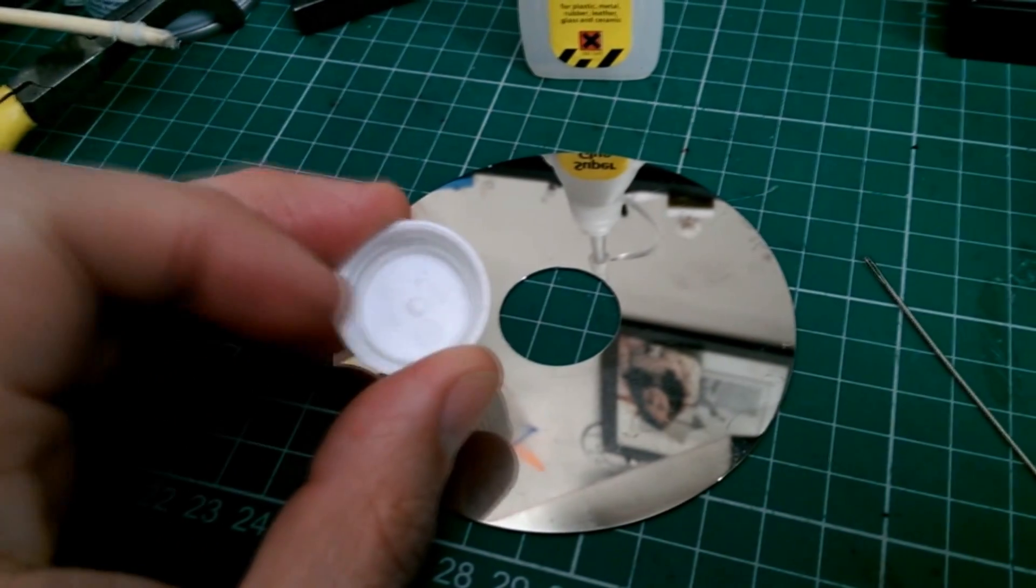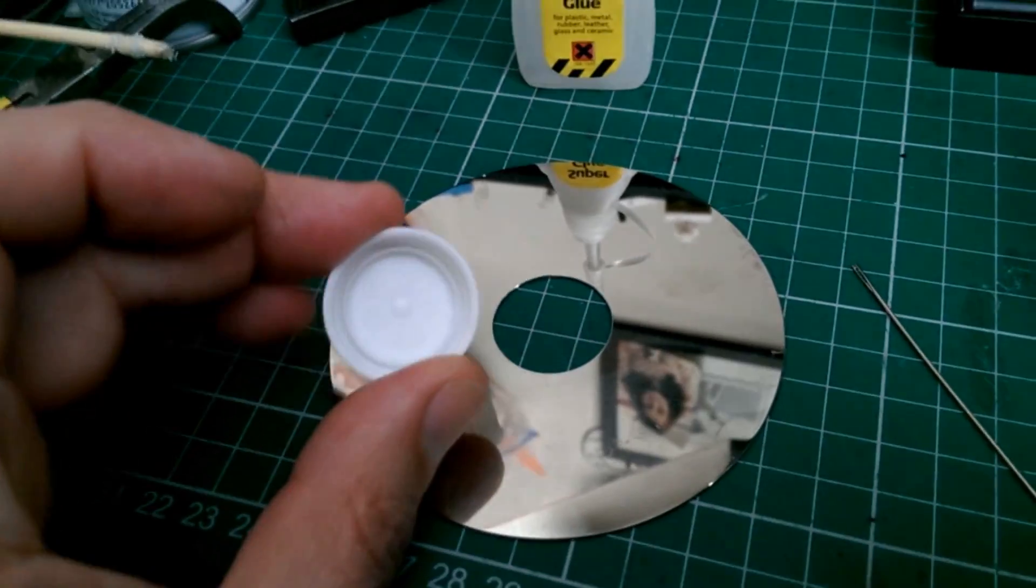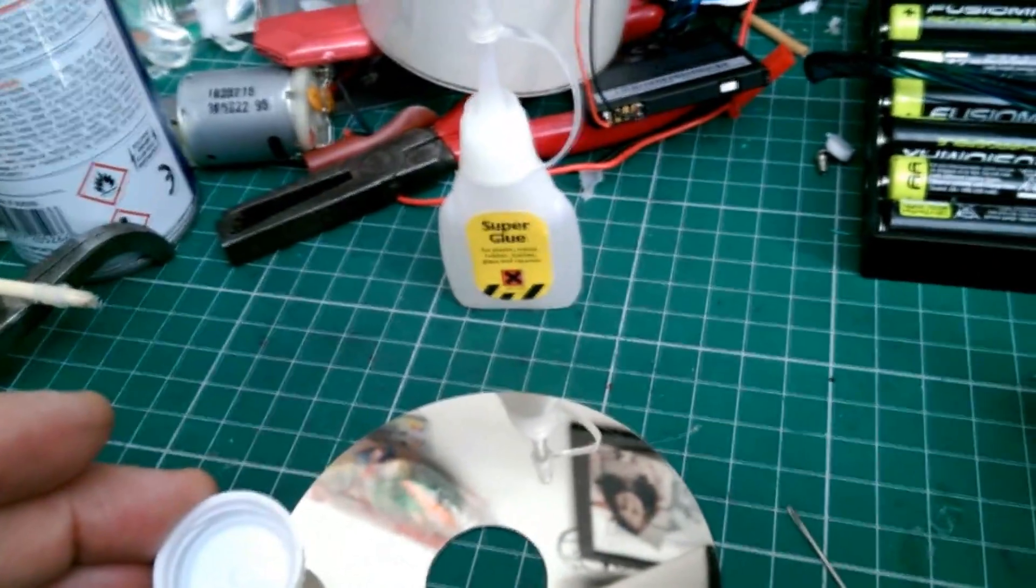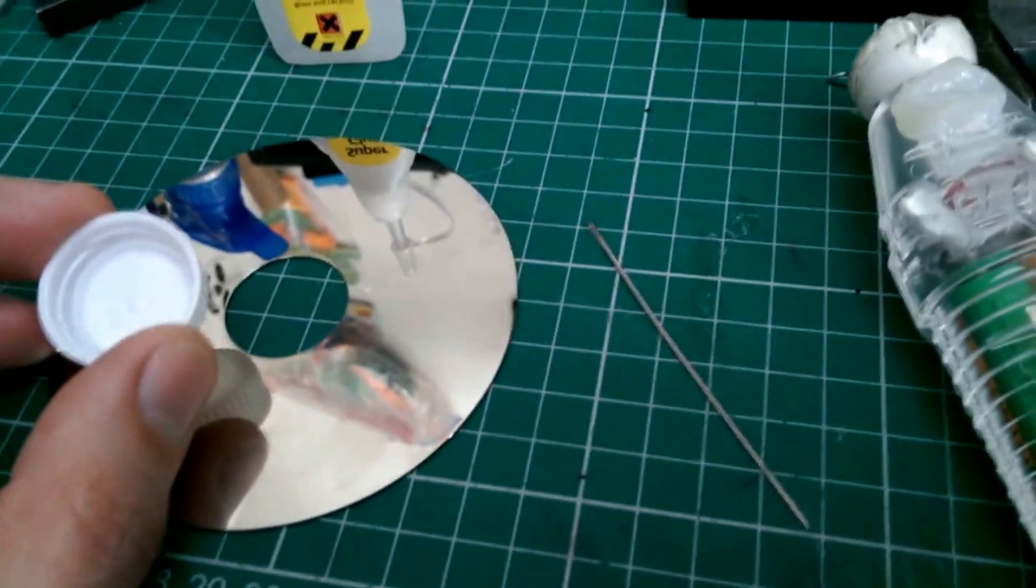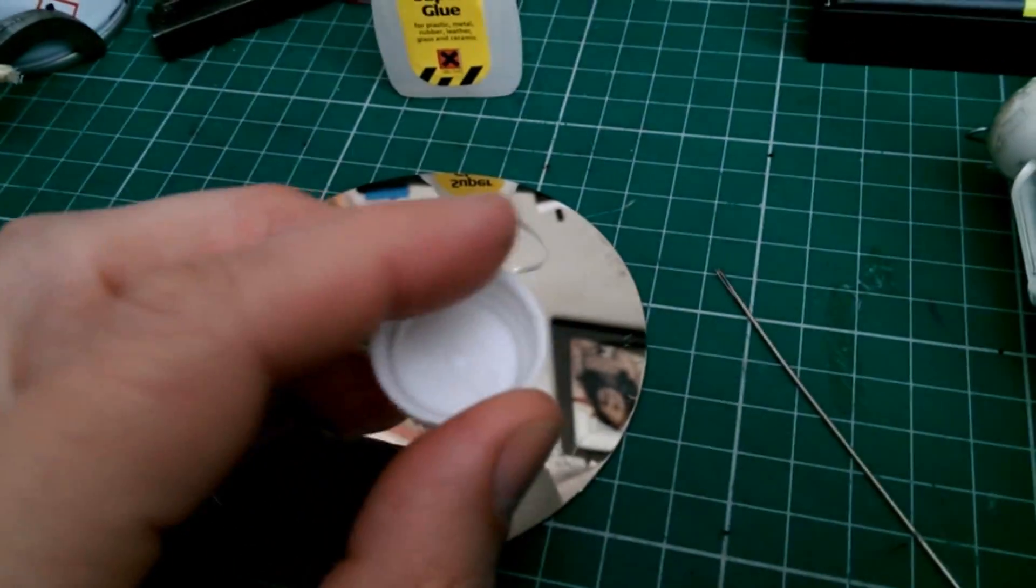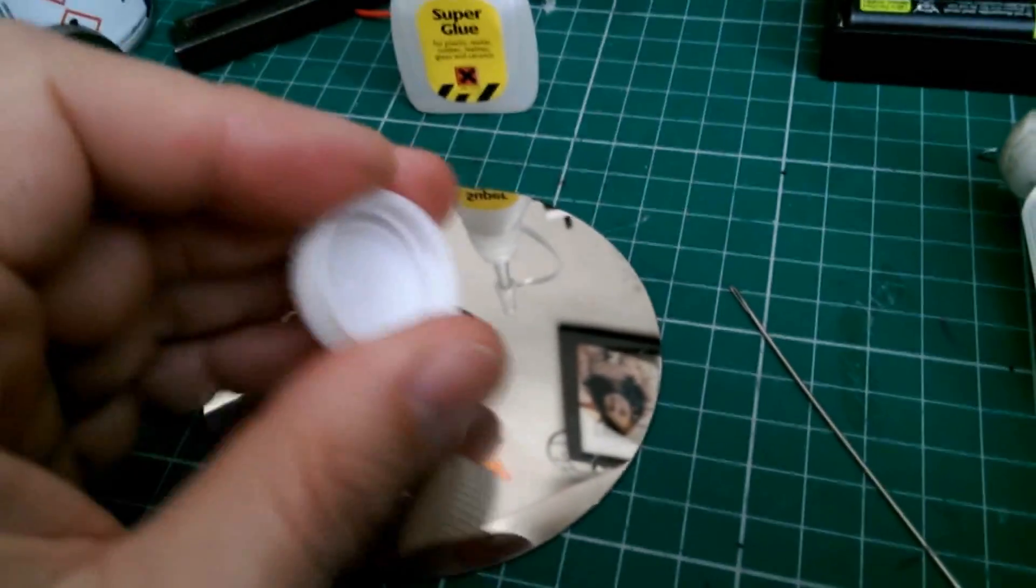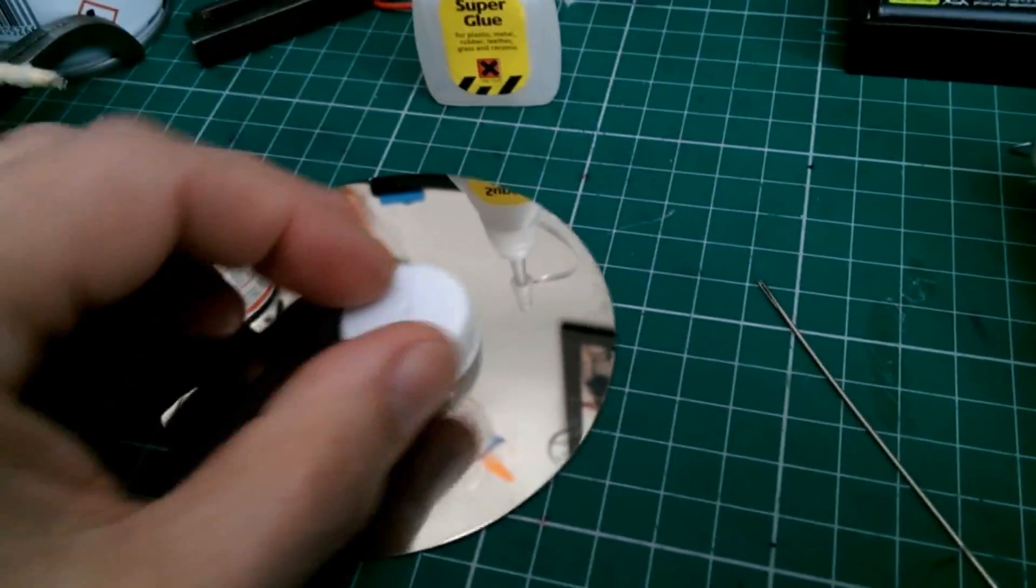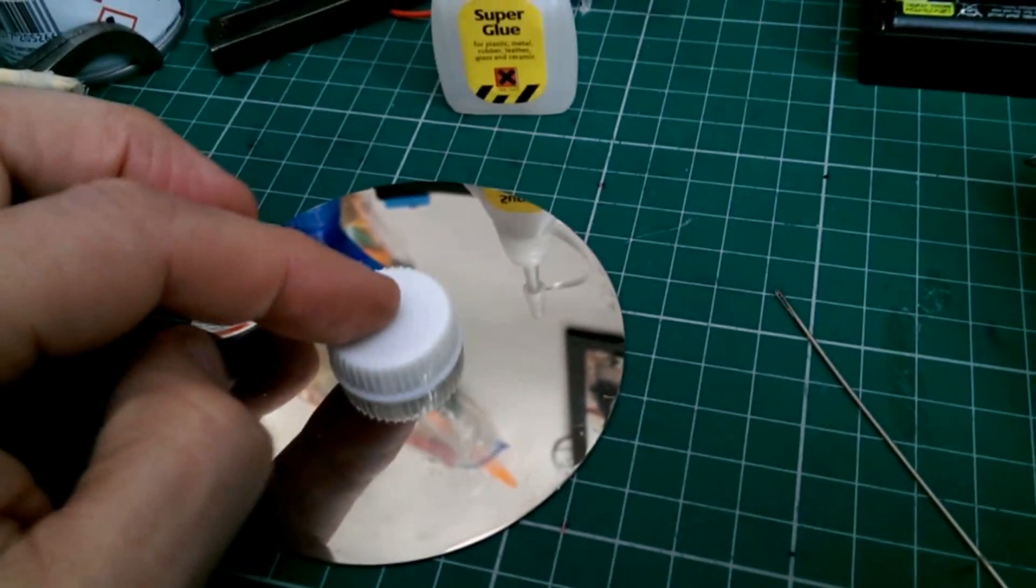A plastic bottle top that's got a convenient little dimple in the middle so we can find the center. I've got some super glue, so I'm going to push the needle through that dimple and glue the plastic bottle top to the middle of the hard drive platter.